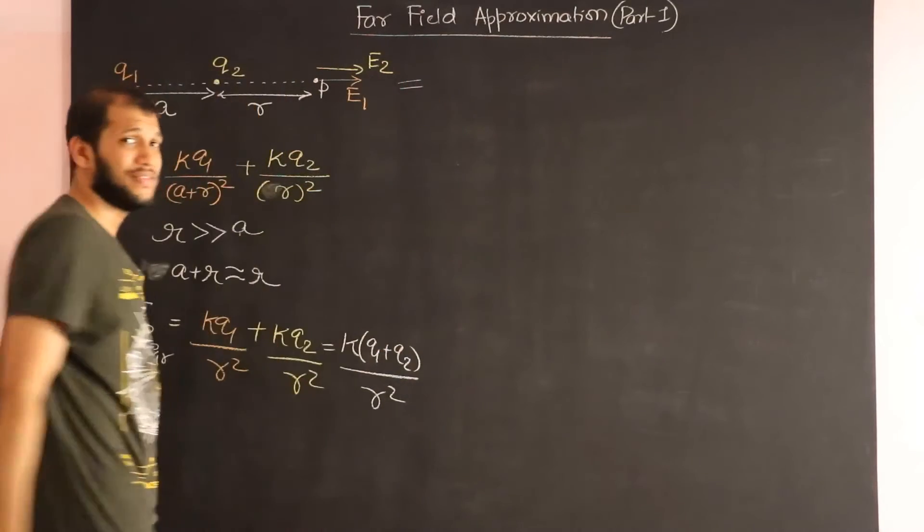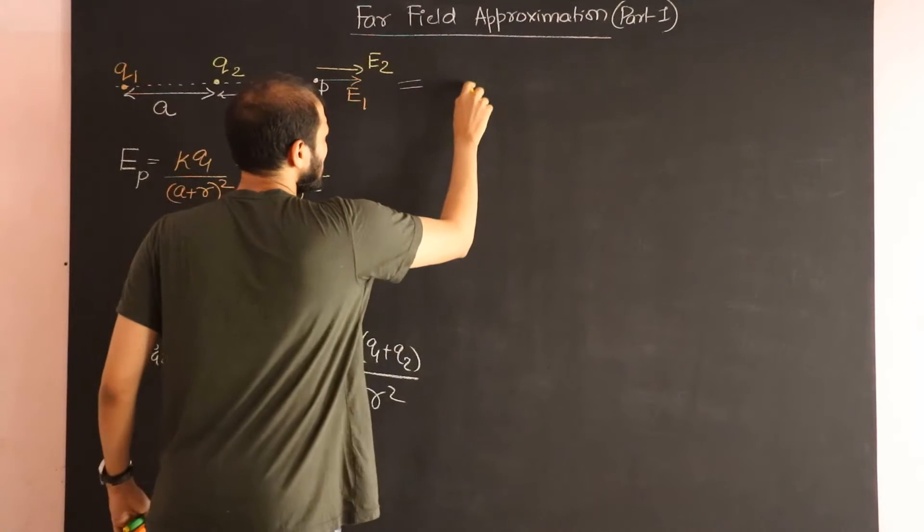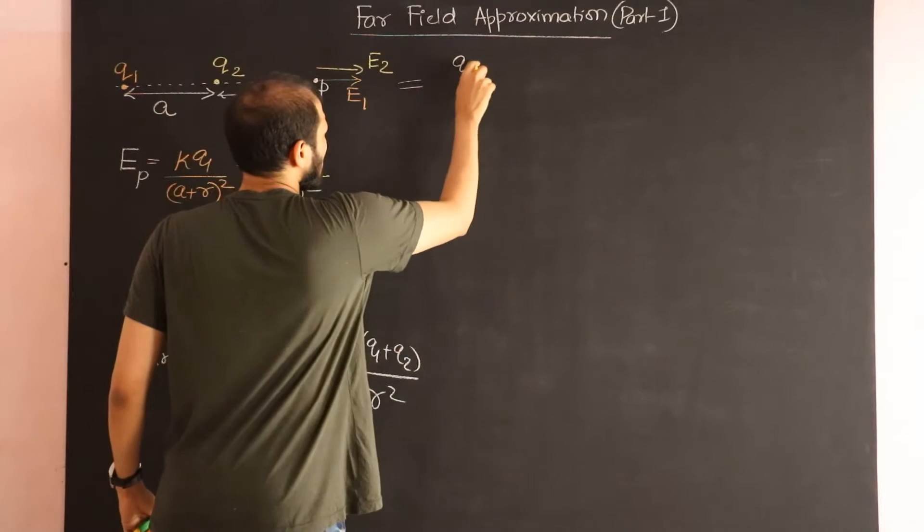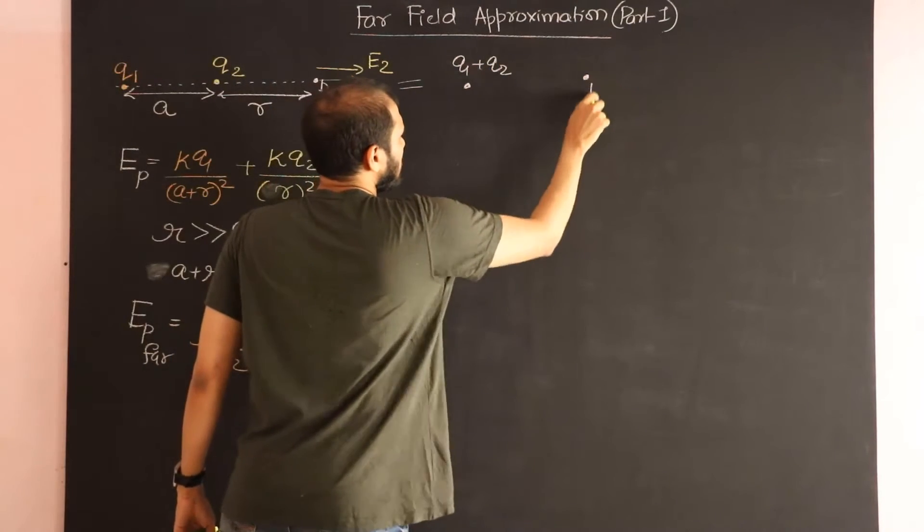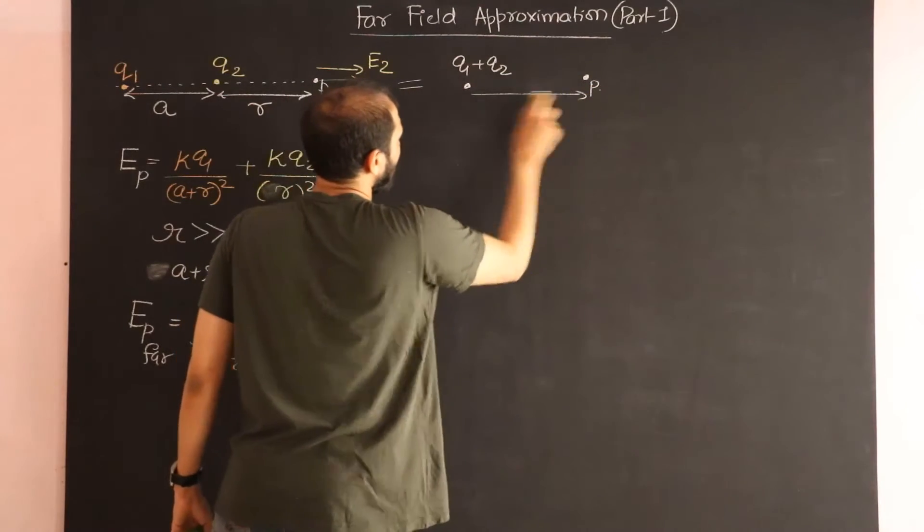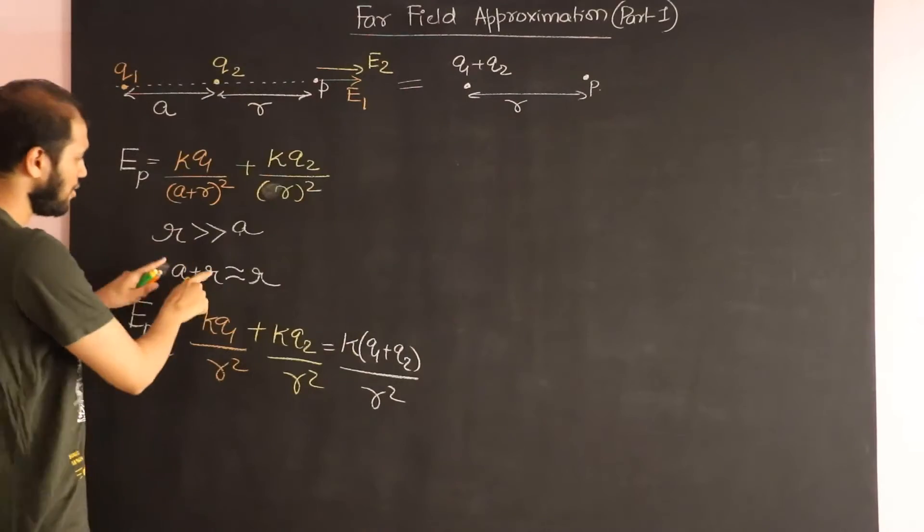So what I'm trying to tell you is as long as the point P is far away, I can assume that this configuration is equivalent to having one single charge Q1+Q2 and assuming that I'm calculating the electric field at a distance R, provided we work under this condition.